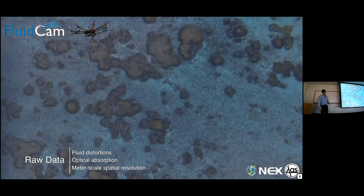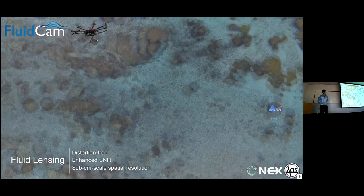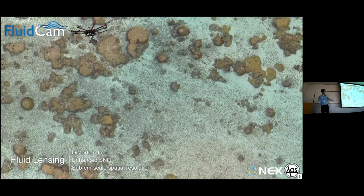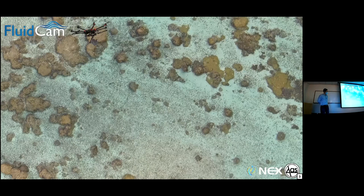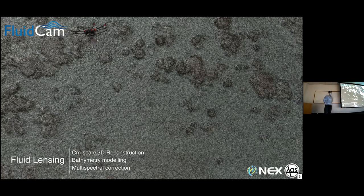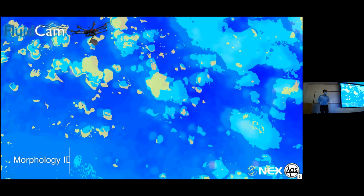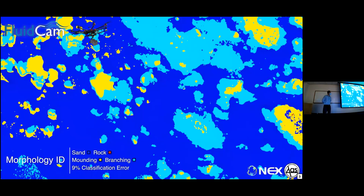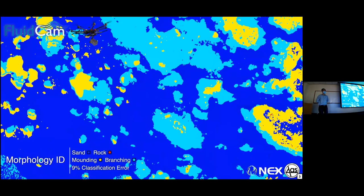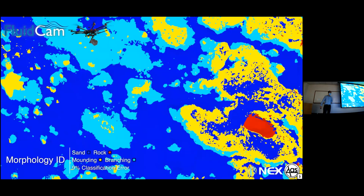We are using an instrument called FluidCam. It removes the fluid distortions from the surface of the water so you can get a much clearer, high-resolution picture underneath, about one centimeter in scale. What we're trying to build is a bathymetric map using that data, but also a classification map — so you can see what is coral, what is not, and separate into mounding corals, branching corals, and different morphologies. This was from American Samoa, one of our first test sets.